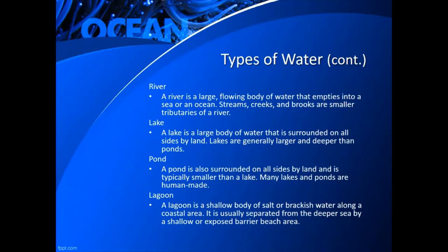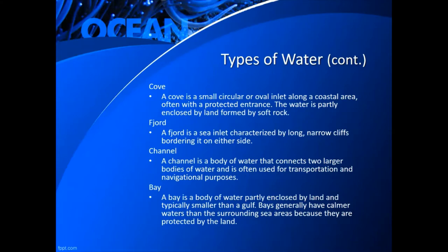A lagoon is a shallow body of salt or brackish water along a coastal area, usually separated from the deeper sea by a shallow or exposed barrier beach area. A cove is a small circular or oval inlet along a coastal area, often with a protected entrance — the water is partly enclosed by land, formed by soft rock. A fjord is a sea inlet characterized by long, narrow cliffs bordering on either side. A channel connects two larger bodies of water and is often used for transportation. A bay is a body of water partly enclosed by land, typically smaller than a gulf, with calmer water because it's protected by land.